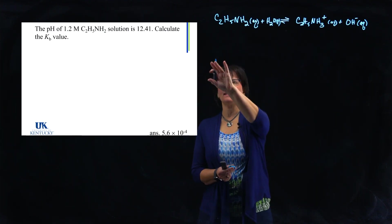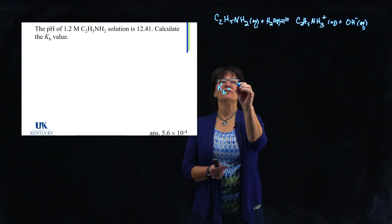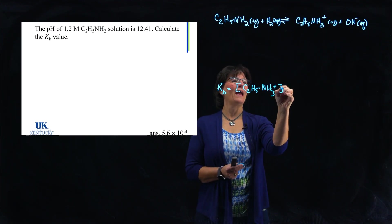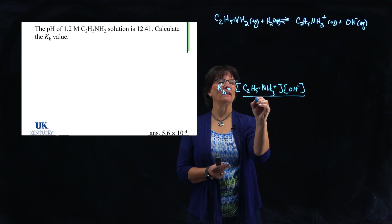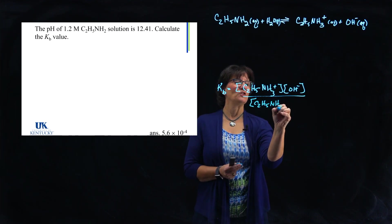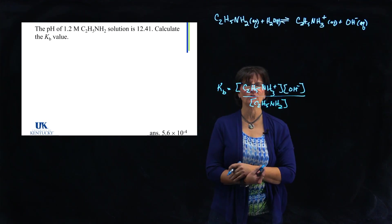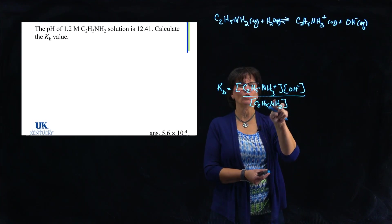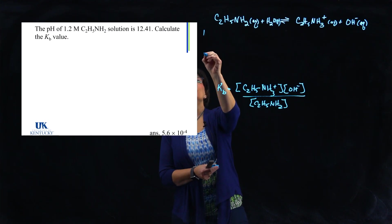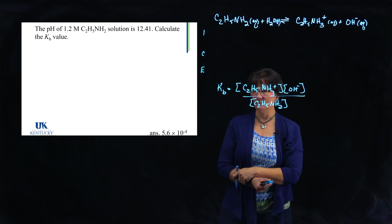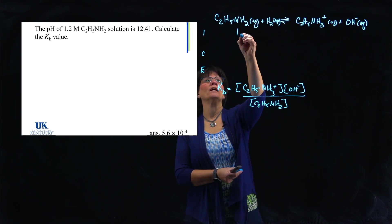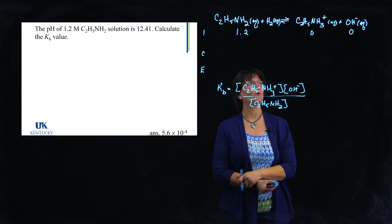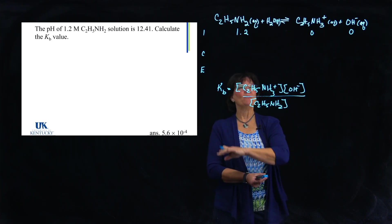Now I'm going to leave some room for an ICE table and go ahead and write the KB expression because this is what I'm going to use in my calculation. So it's products over reactants raised to the power of their coefficients and we don't include liquids. Now we are trying to determine the value of KB. So if I knew at equilibrium the values for each of these I could know that without any problem. So that's where the ICE table comes in. Now it tells me how much I'm putting in there initially. It's 1.2 and this is zero and this is very nearly zero. We can approximate it as zero.